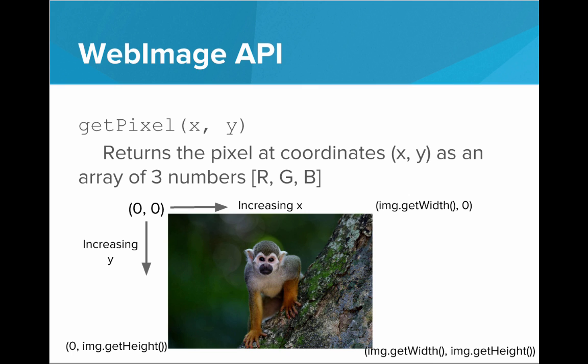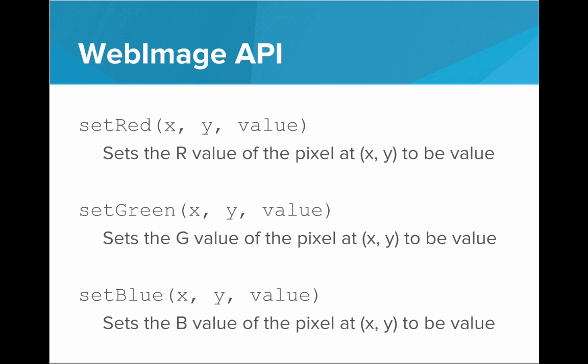That's how we can read pixel data from an image. But what if we want to actually modify those pixels? WebImage provides an API for that as well. We can call setRed, setGreen, or setBlue at a specific coordinate and pass it a value, and it will set the R, G, or B value of the pixel at x, y to be the value we pass in. So using this, we could set all the red in the image to be 0, or set all the green to be 255. These are the function calls we'll use to manipulate the pixel data of our images.